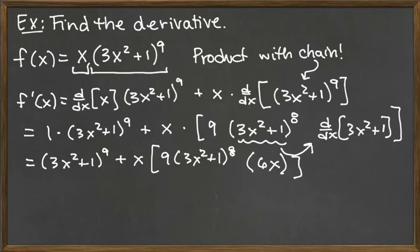At this point the derivative has been completely taken, but we can do a little bit to clean this up slightly better. And so we can have this first thing, 3x squared plus 1 to the 9th power and then we've got the x times the 9 and then we have this factor here that's raised to the 8th power and the 6x.